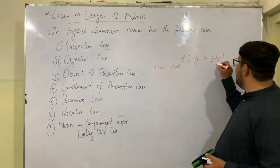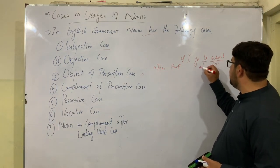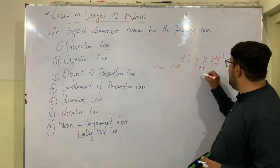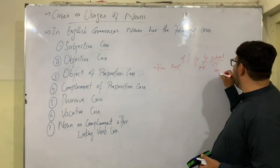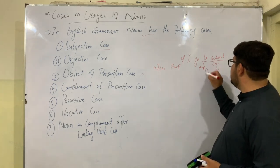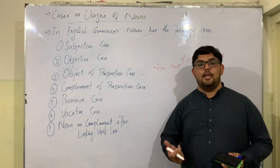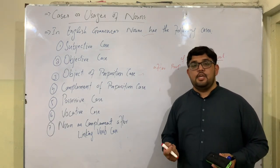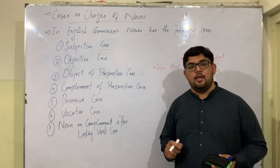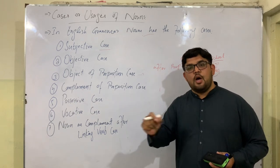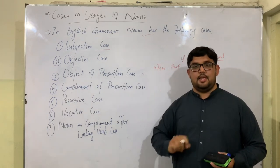So 'school' is a noun. It comes after the preposition 'to,' functioning as the object of the preposition. Noun comes after a preposition to function as the object of preposition case.